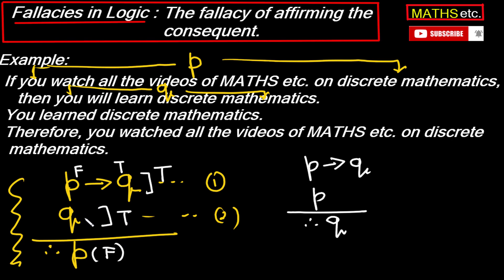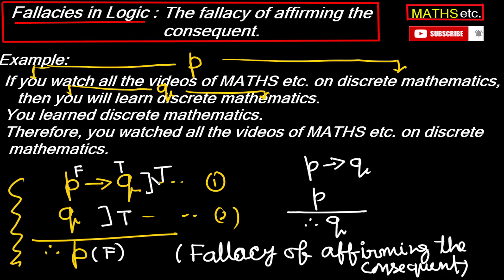Because we are assuming that if we affirm the consequent as true, then the antecedent also becomes true — which is incorrect. This is a fallacy. Therefore this fallacy is called the fallacy of affirming the consequent. So any argument of the form P→Q, Q therefore P — whatever the statements P and Q may be — whenever this argument form appears, it will always be an invalid argument due to the fallacy of affirming the consequent.